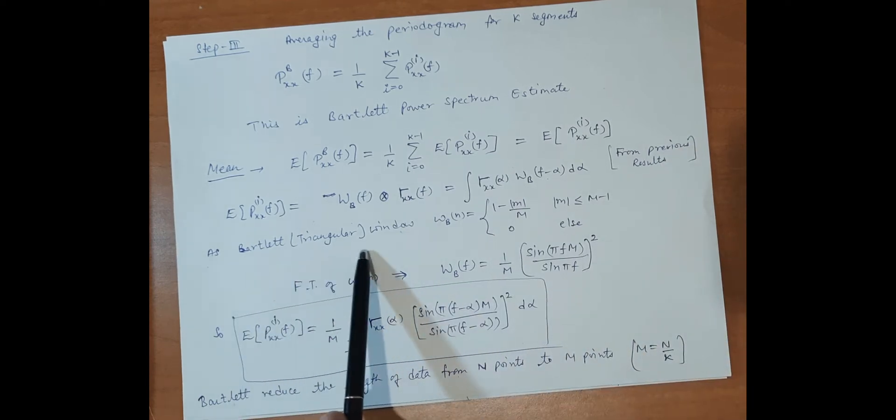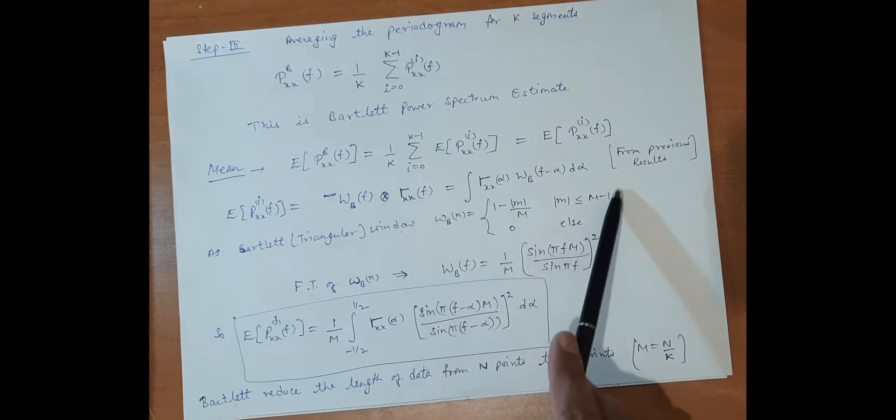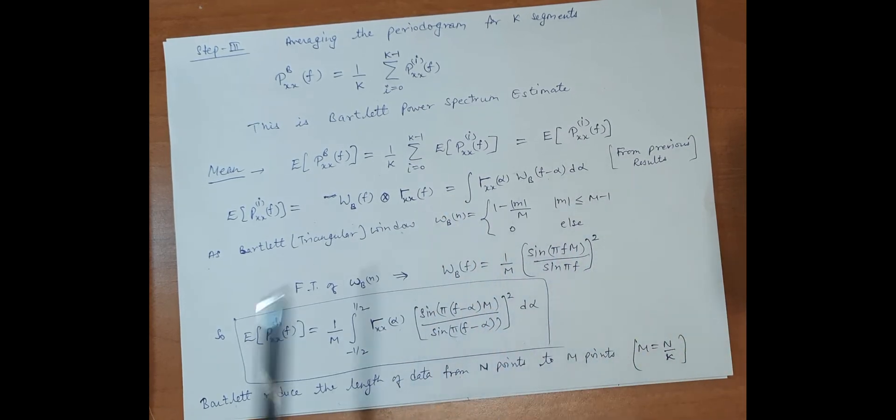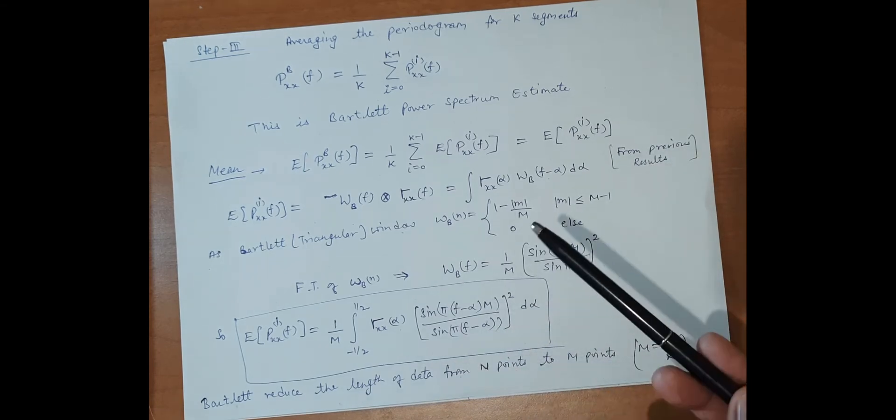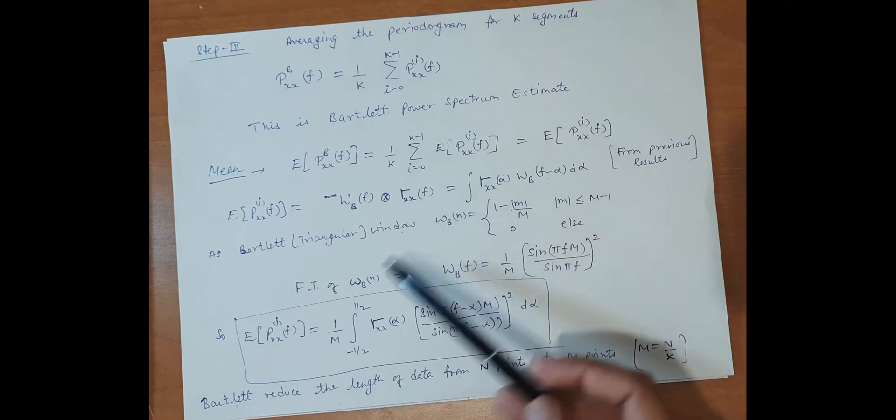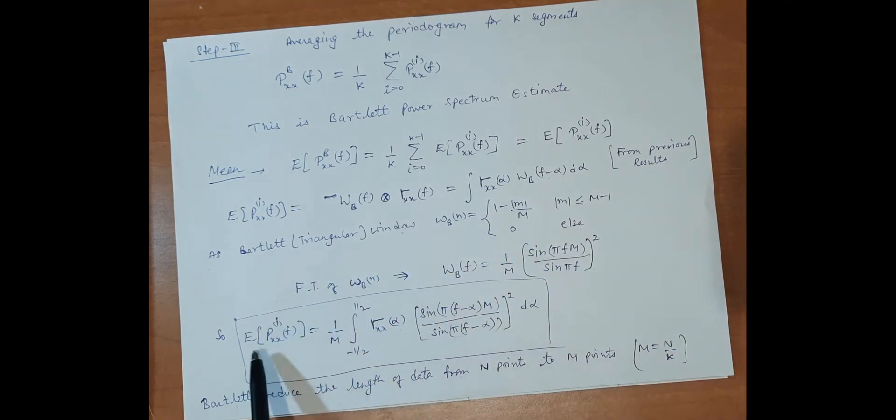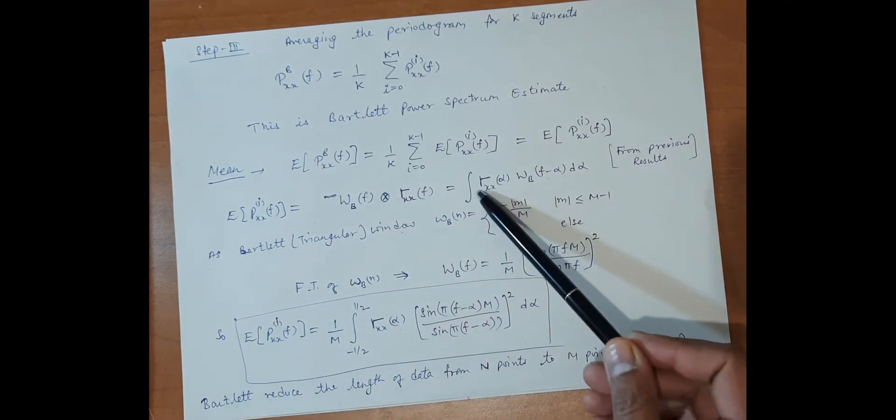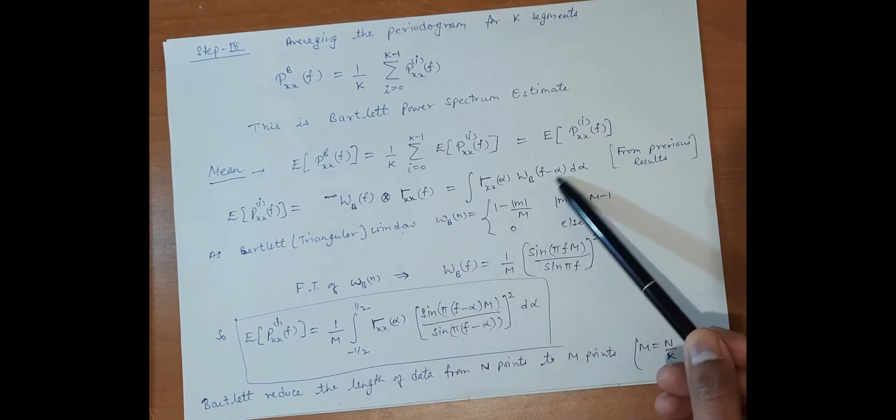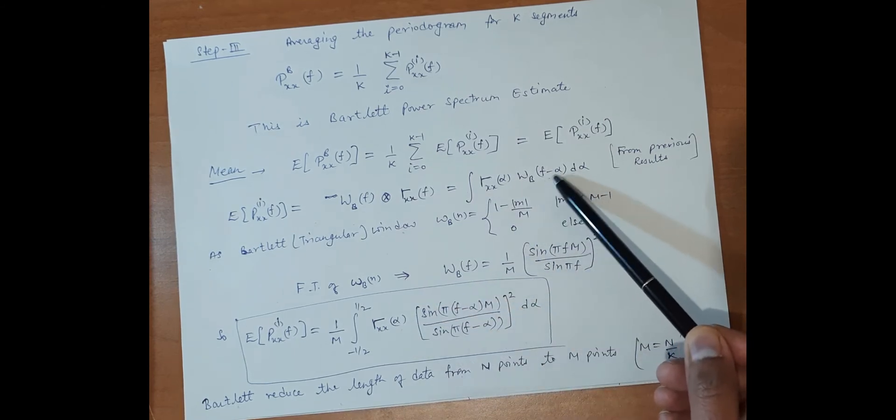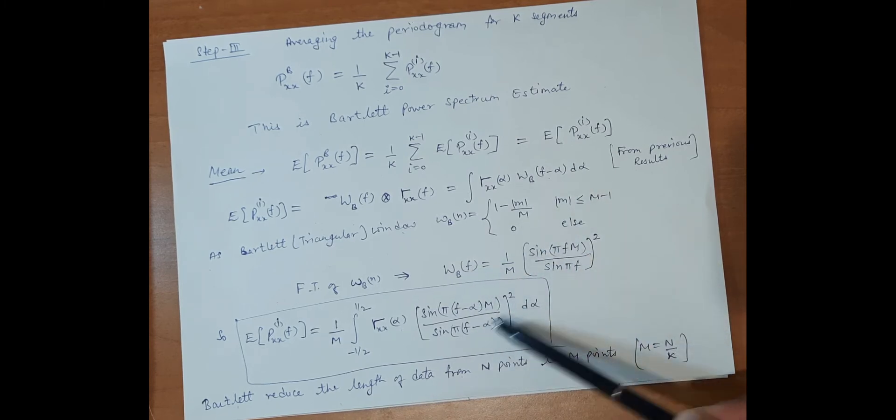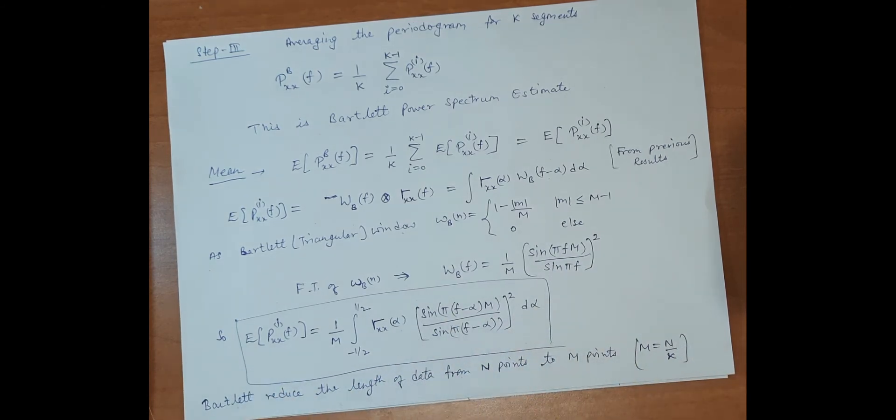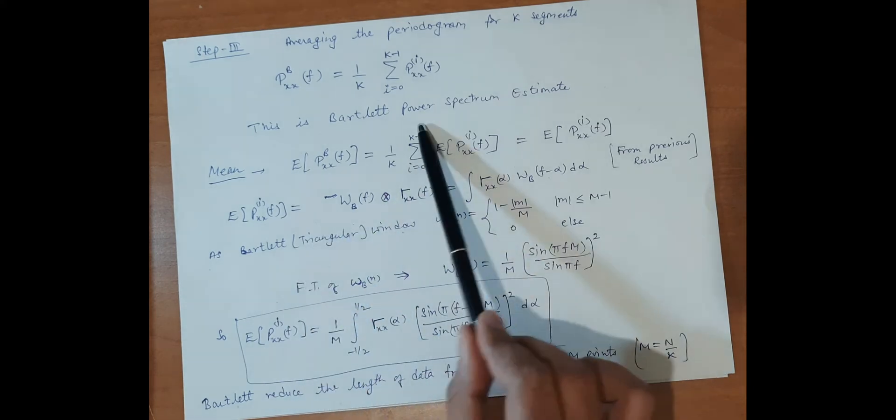The Bartlett triangular window and Fourier transform are given in the previous video. We have accumulated the results in the Bartlett case. The final result is γ_xx(α) convolved with W_B(f-α), where f is replaced by f-α everywhere. This is the mean of the Bartlett power spectrum estimate.